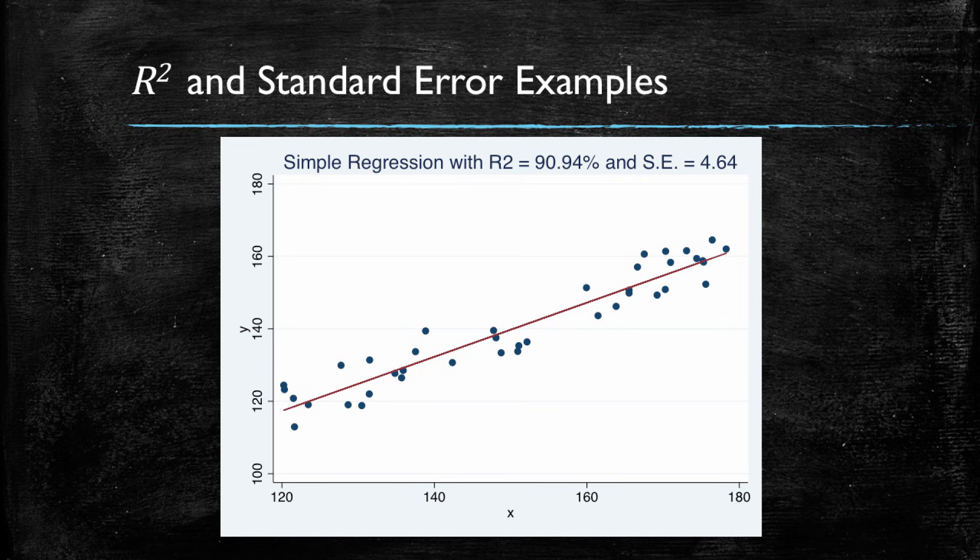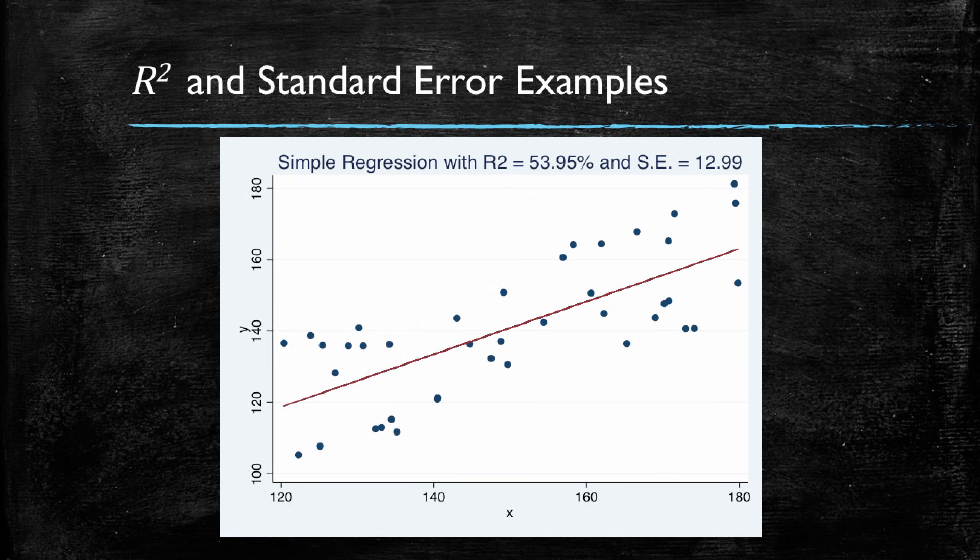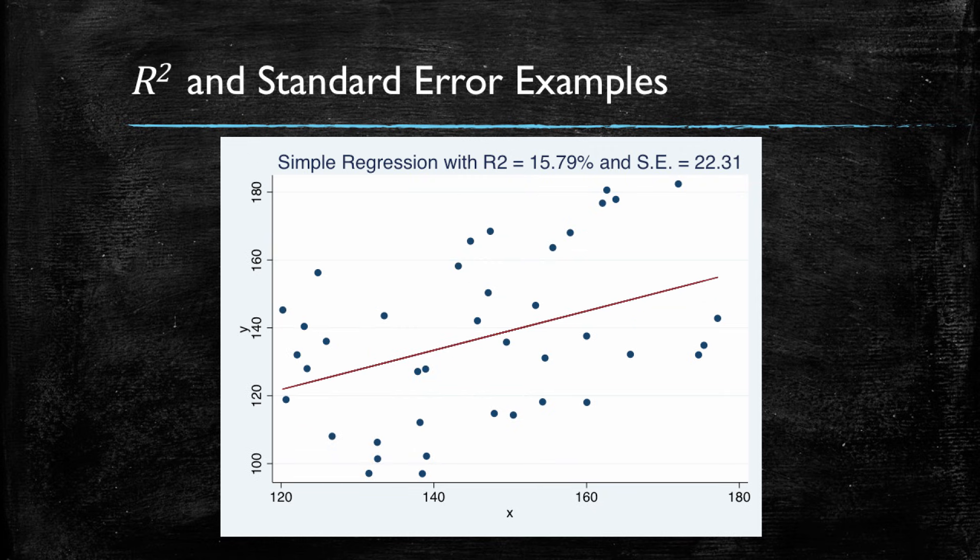As we start running models that do not explain the variance as well, the R squared continues lowering. And note that the standard error grows. Now it's a 4.64. It grows to a 5, to a 10. And as we continue advancing, we note that the less it is able to explain the variance in the dependent variable, the higher the standard error of the regression is going to be.